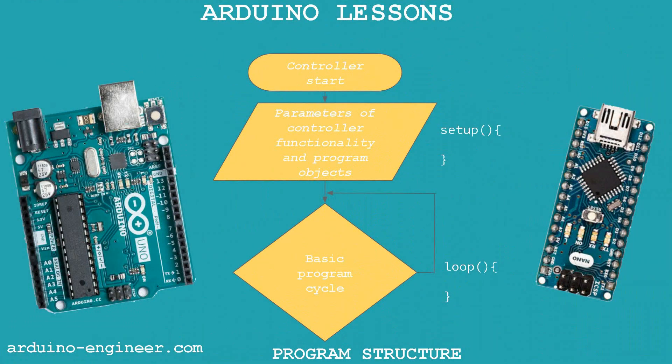To understand the differences between these functions, let's look at the block diagram of a minimal Arduino program. After the start, the controller processes the expressions between the curly braces of the setup section. After completing all the tasks of the first function, the controller takes up the endless sequential execution of the program code of the loop section, which should perform all the useful work laid down by us in dynamic mode.